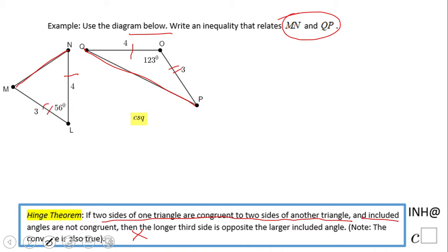And included angles are not congruent. We notice this will be 123, obtuse, and this is acute, 56. It doesn't matter the fact that obtuse and acute numbers, that they are different, they are not congruent.